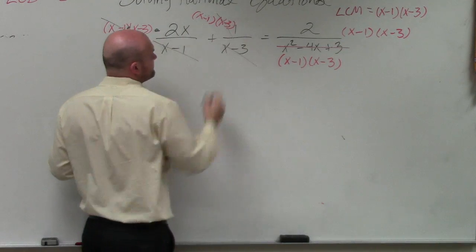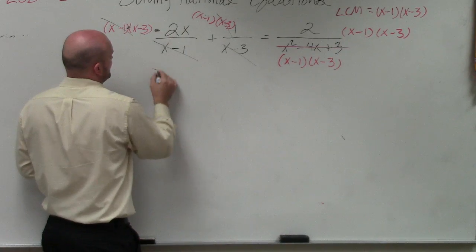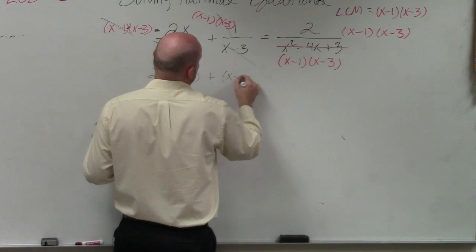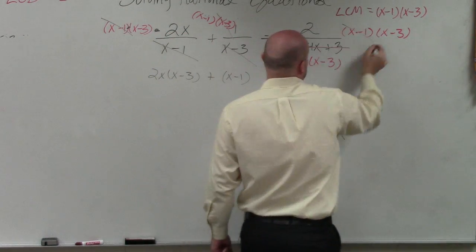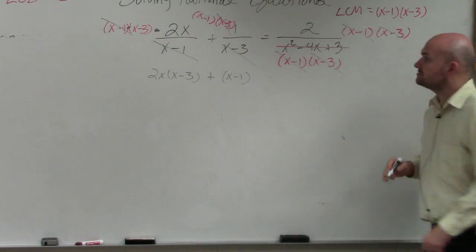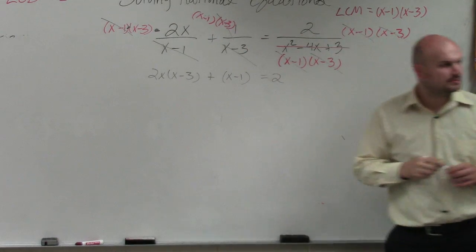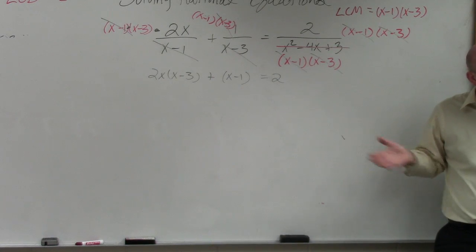OK. Here, the x minus 3's divide out. So anyways, I'm left with a 2x times x minus 3. Here, I'm left with a positive x minus 1. And here, the x minus 1's divide out, and x minus 3's divide out. So I'm left with a 2. That's it.